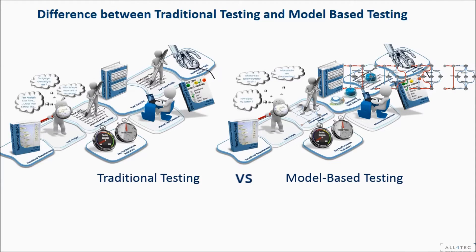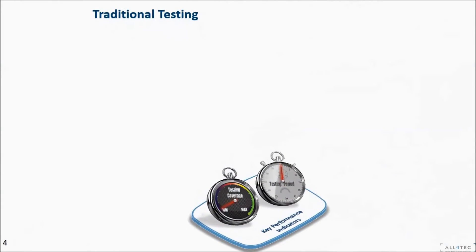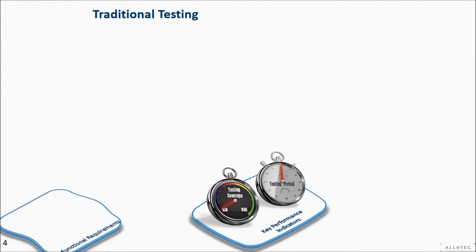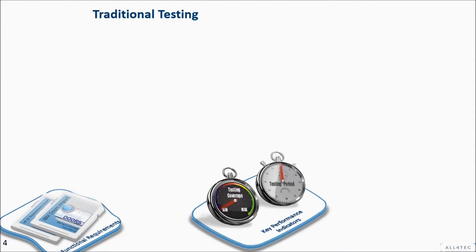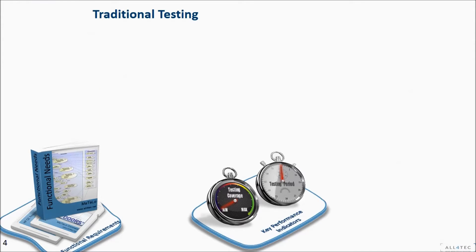So what was the traditional testing in the past? In order to test a system, you need to know how it works. Usages of your system can be described through structured requirements such as HP ALM Quality Center requirements, or IBM DOORS requirements, or functional need documents, or even from agile user stories.